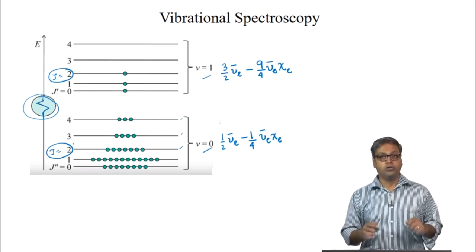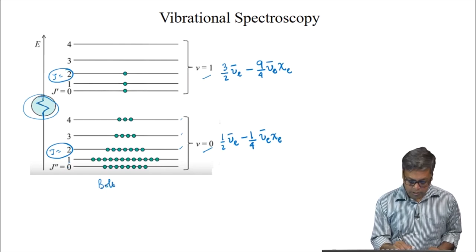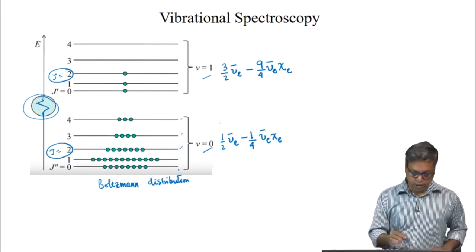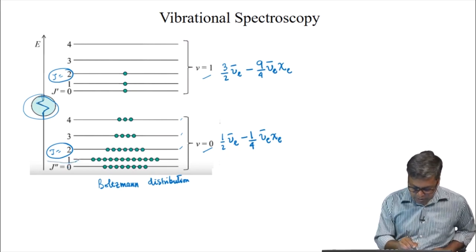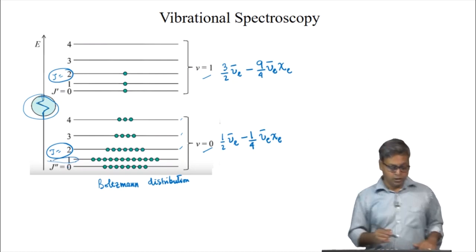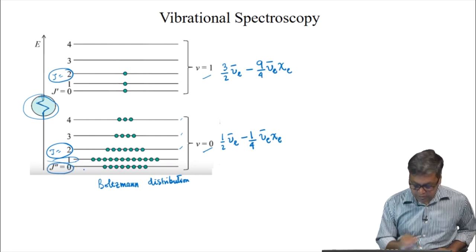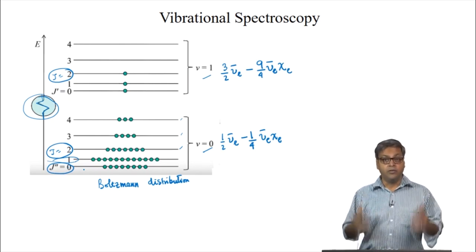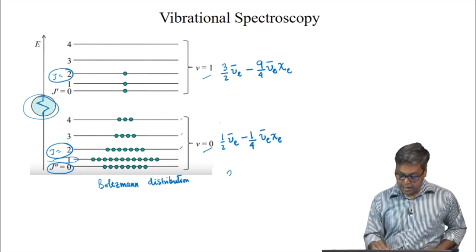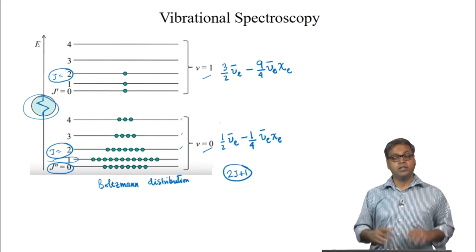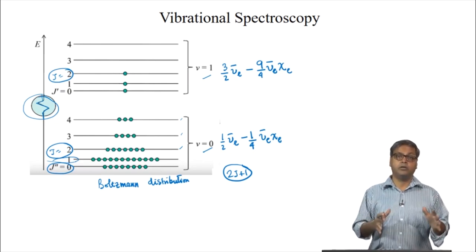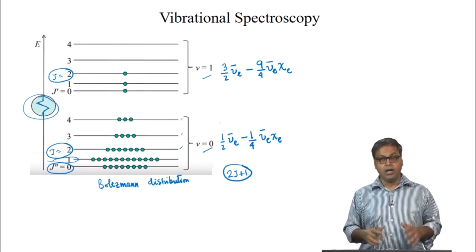The figure also illustrates the Boltzmann distribution. The V equals 1, J equals 0 state has higher population than V equals 0, J equals 0 due to degeneracy. As we already know, the level of degeneracy increases as 2J plus 1. In the next lecture, we will look into more details about these rovibrational transitions. We will end this lecture by solving a few problems.